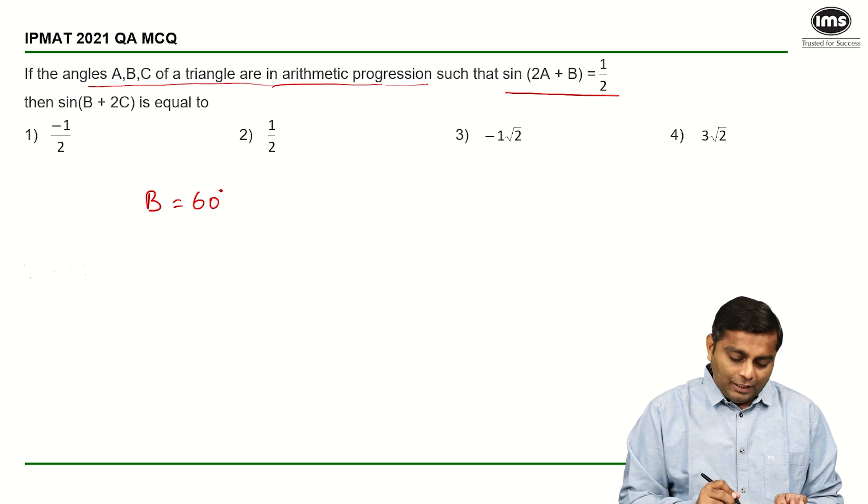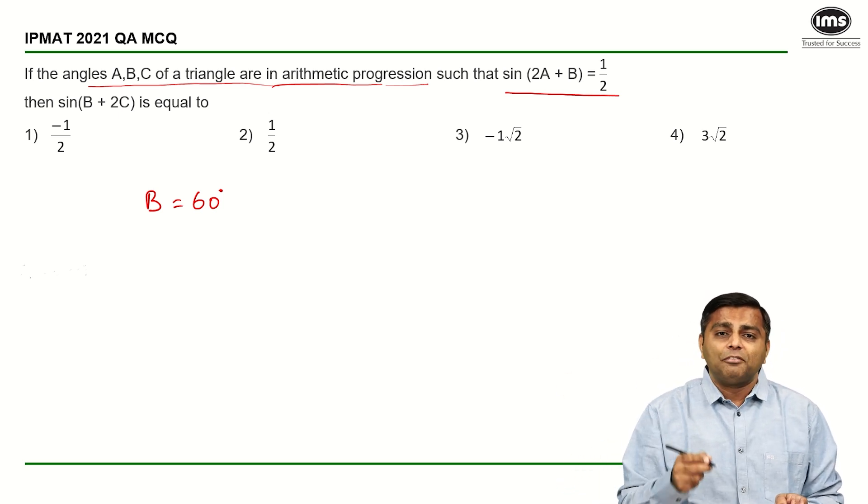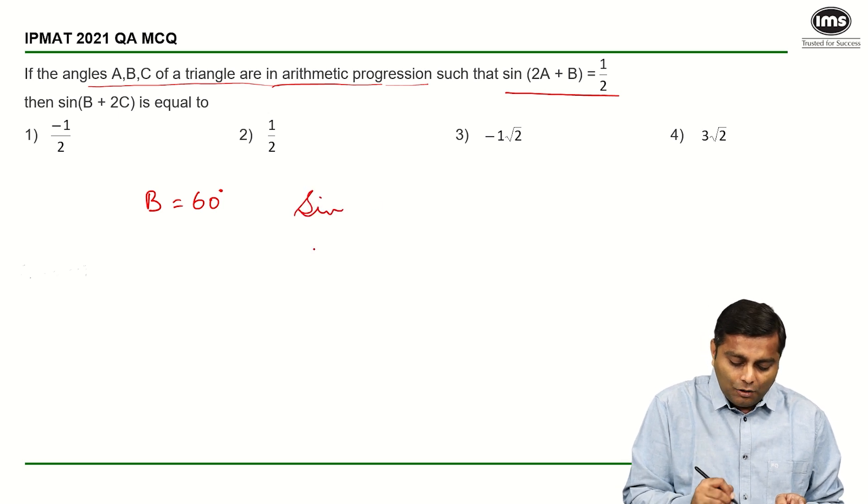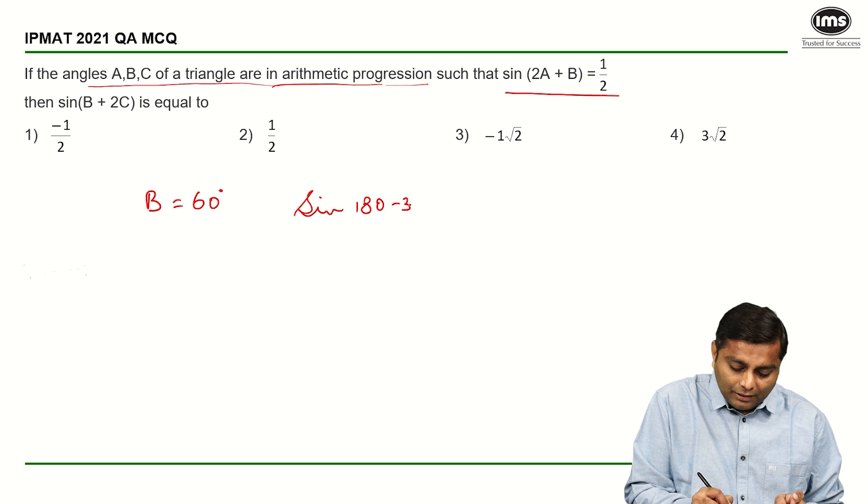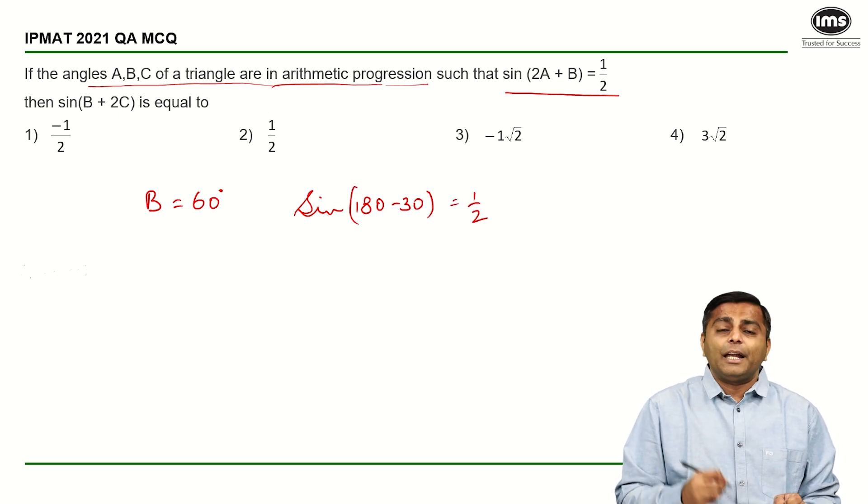So the next value when sine takes half is sine of 150 in the second quadrant. We know that sine of 180 minus 30 should also be equal to half, and in the second quadrant sine is positive.